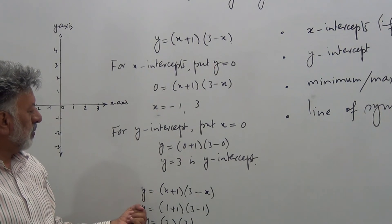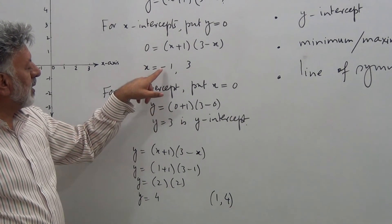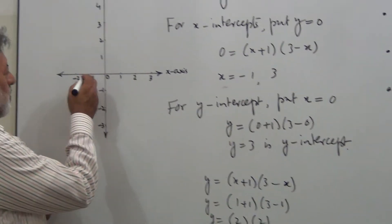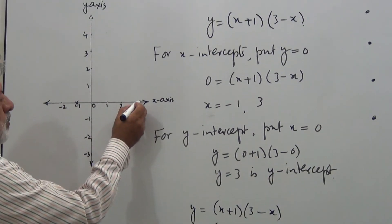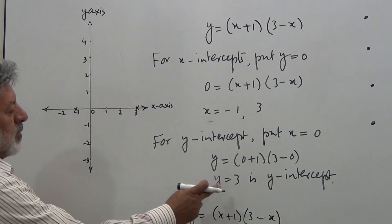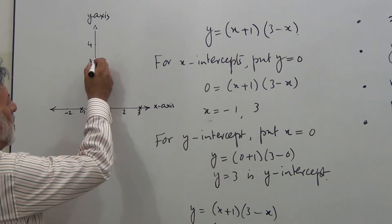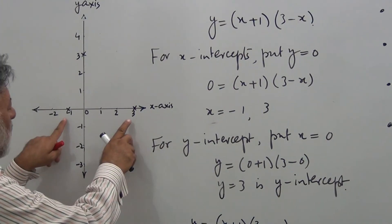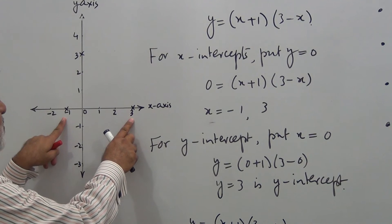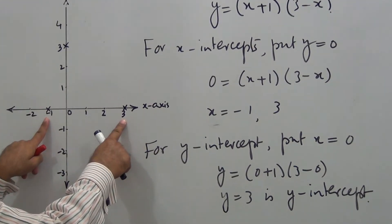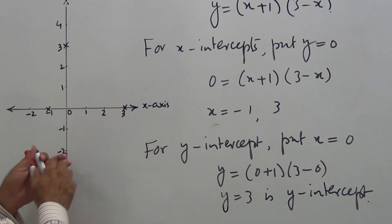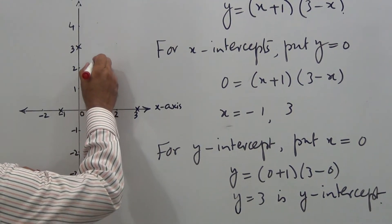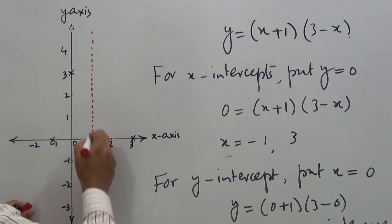Once we have gotten the x-intercepts -1 and 3, I mark them and the y-intercept. You would notice that the line of symmetry passes through the midpoint of these two intercepts. So x = 1 is the line of symmetry.